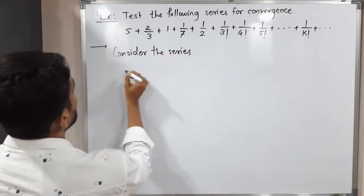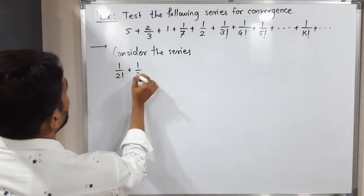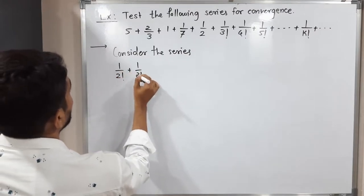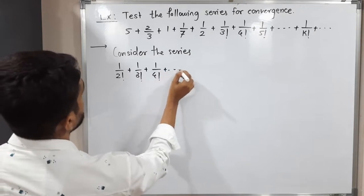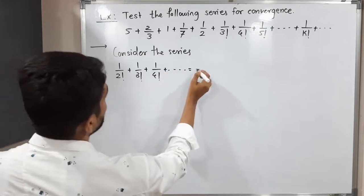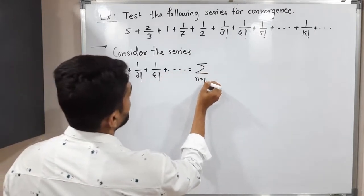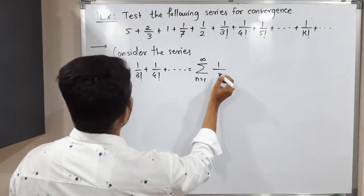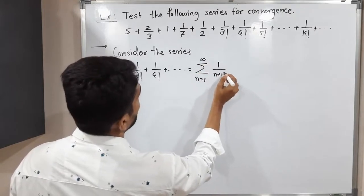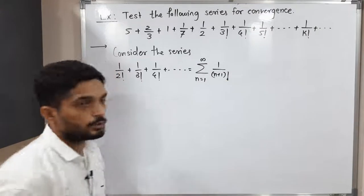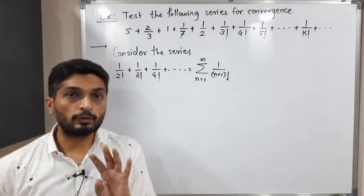Consider the series: 1/2 factorial plus 1/3 factorial plus 1/4 factorial and so on. The same series can be written as summation n running from 1 to infinity of 1 upon (n+1) factorial. This is the series which we are considering.